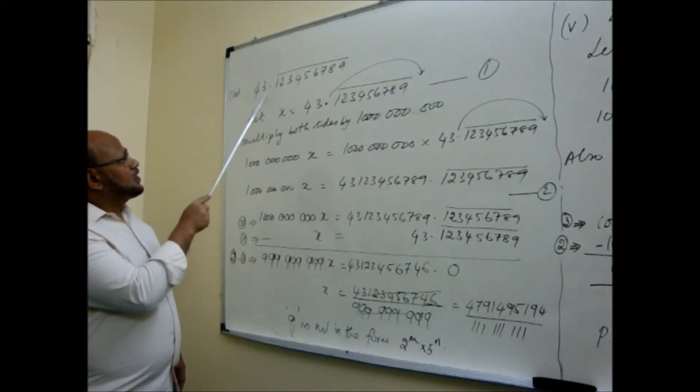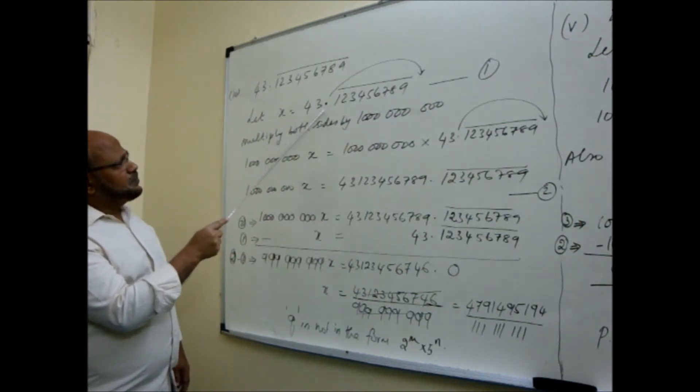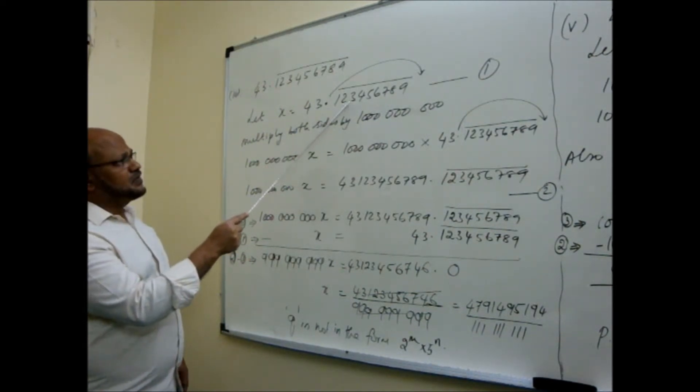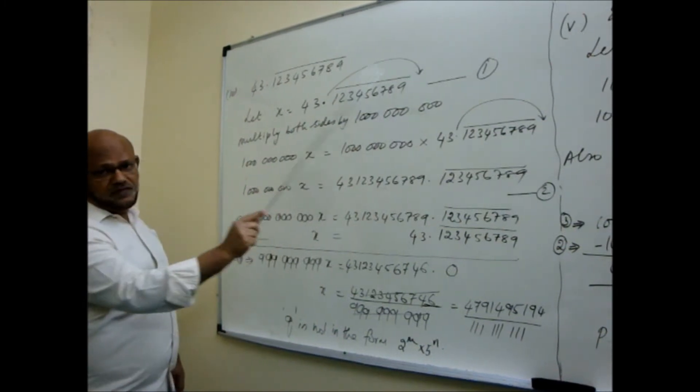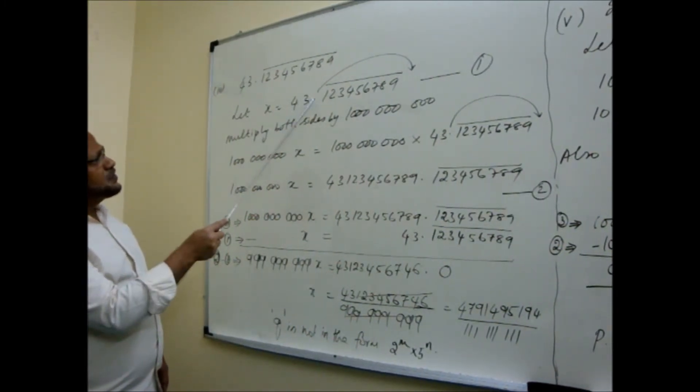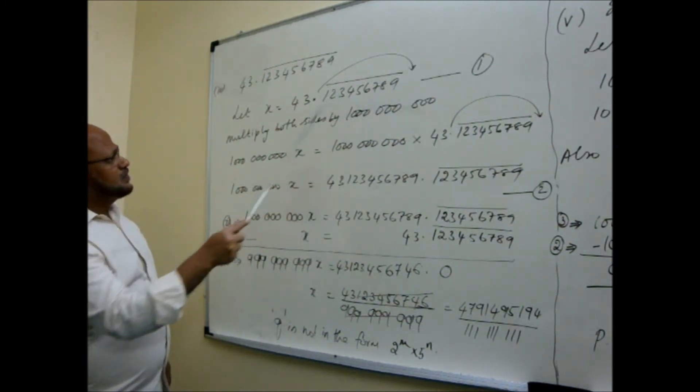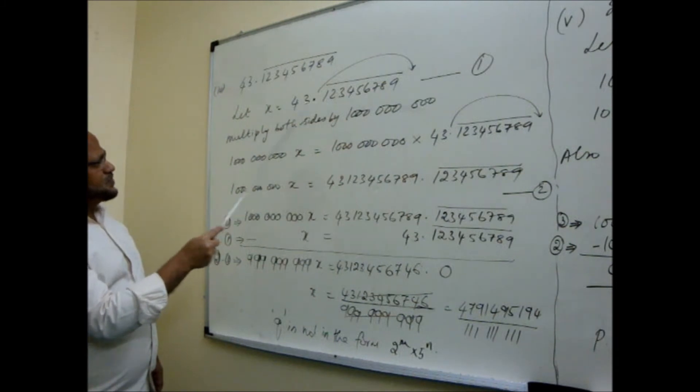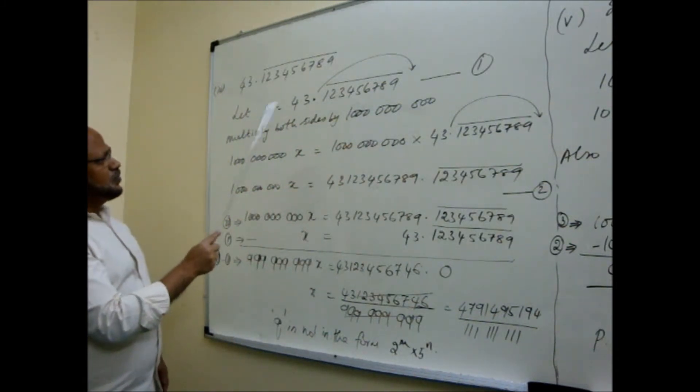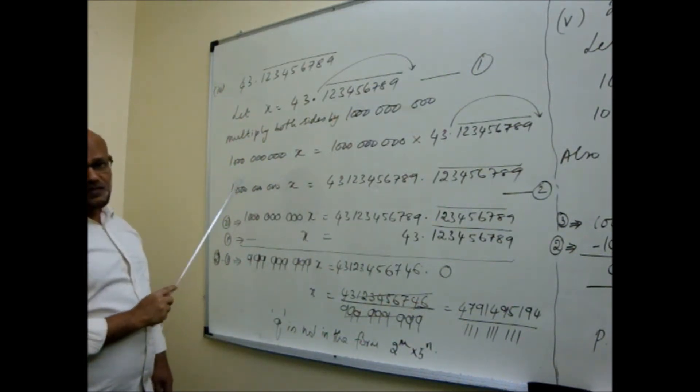Let's come to this question. This textbook question. Repeating non-terminating, repeating decimal. So how you write it in the form P by Q? And what will be the prime factorization of Q? Will it be in the form 2 to the power m and 5 to the power n? This was the question. So what you do? We studied already in 9th class, same procedure we follow. So you take the given number as X. X is equal to 43 point 123456789 bar. Whatever given, taken as X.